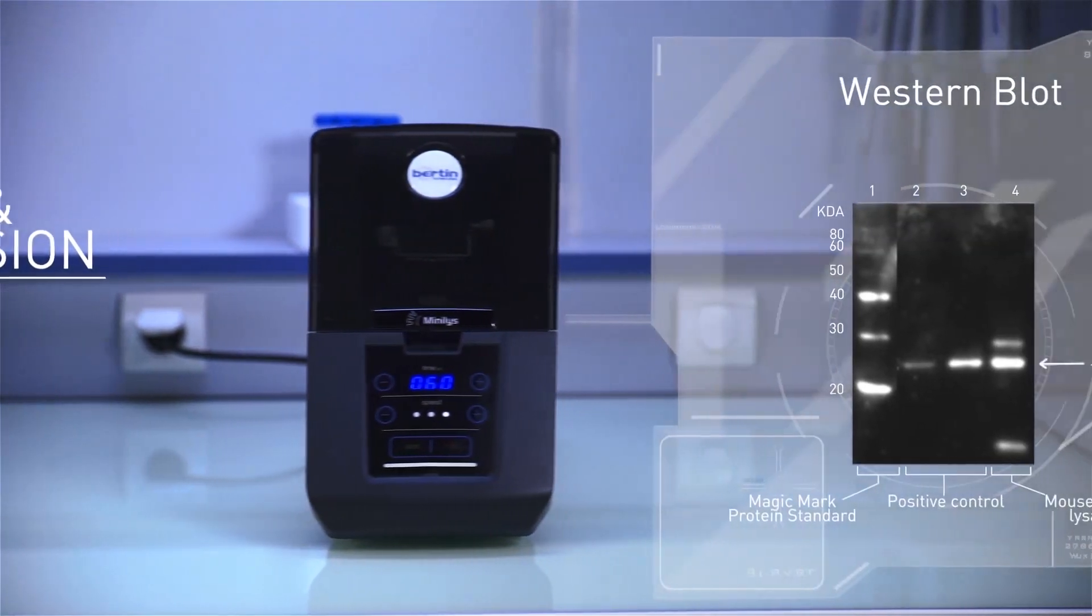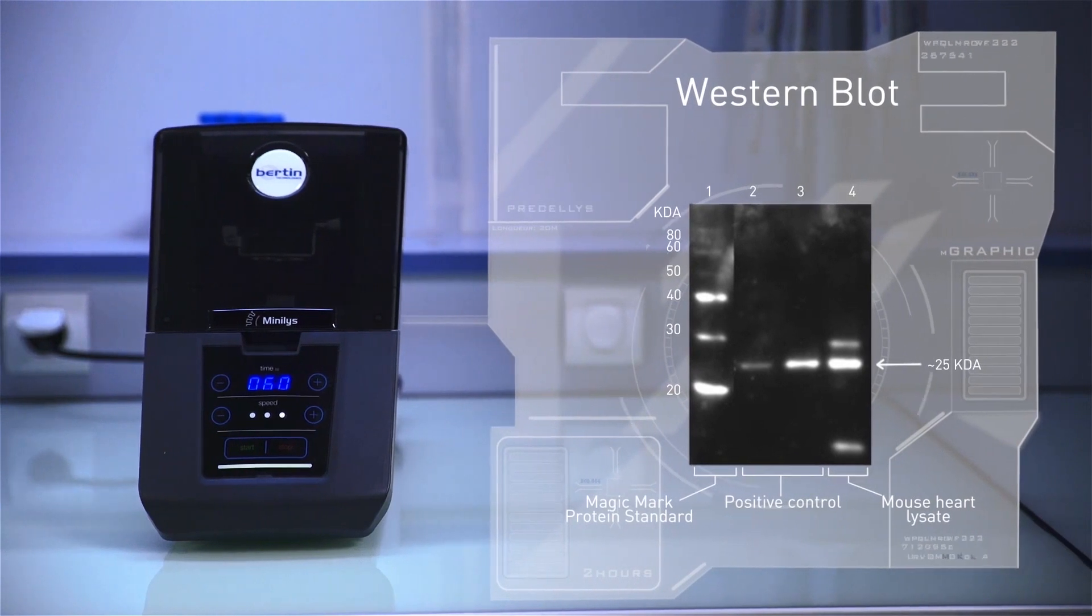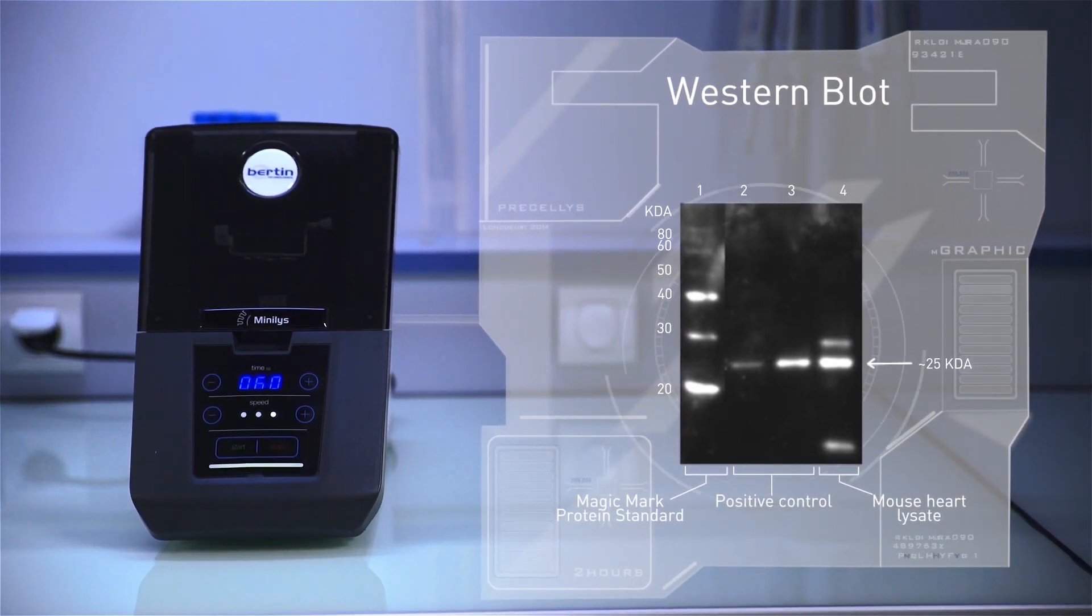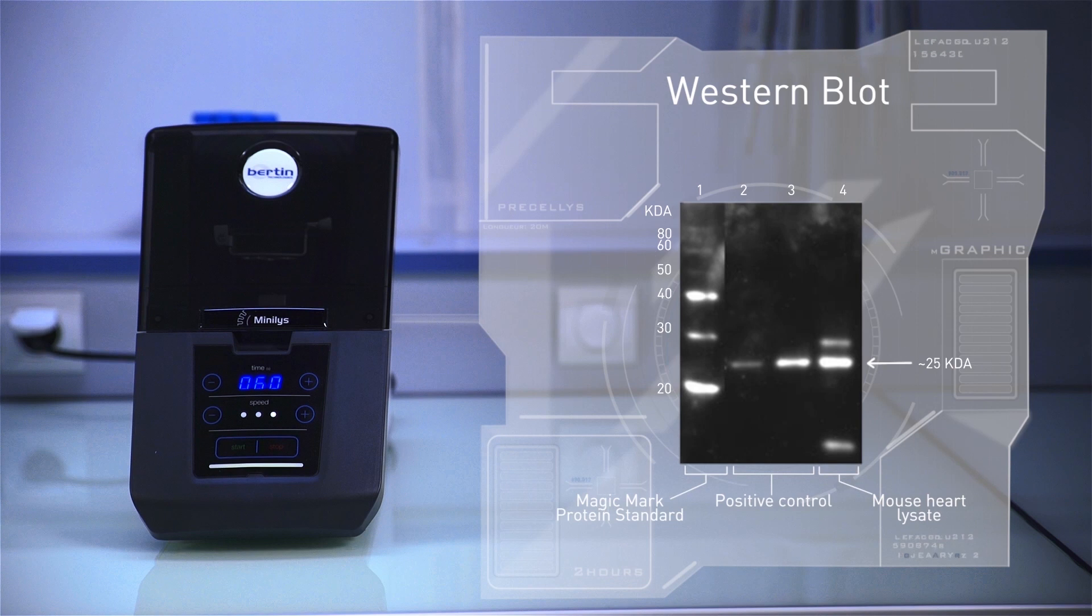HEK293 lysate, which serves as positive controls. Membrane proteins extracted using the MiniLys are run on lane 4. After Western blotting using an S1P3 polyclonal antibody, we observe the presence of clear, sharp bands representing S1P3 at 25 kilodaltons.